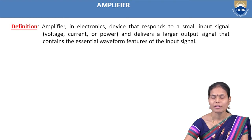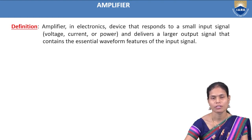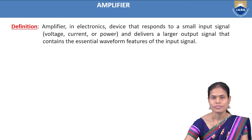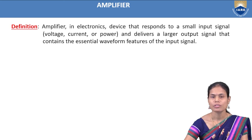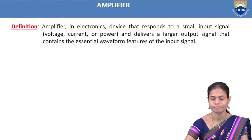This amplification can be achieved by any one configuration of the transistor. In the case of a transistor, we have three configurations: common base configuration, common emitter configuration, and common collector configuration. In all three configurations, we can use the transistor as an amplifier.